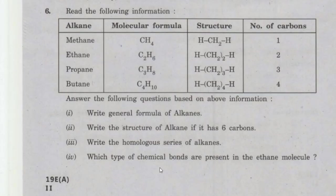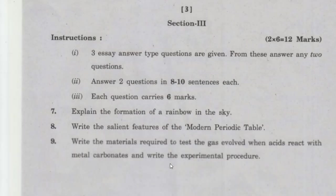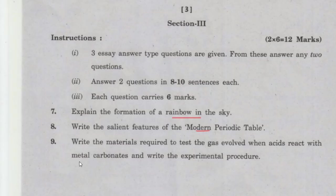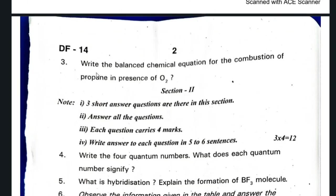Table-related question. Long answers: Explain the formation of rainbow in the sky. Write the salient features of the modern periodic table. Write the materials required to test the gas evolved when acids react with metal carbonates, and write the experimental procedure. Write the materials required and precaution to find the focal length of a concave mirror. Why do cooking vessels sometimes get blackened on a gas or kerosene stove?